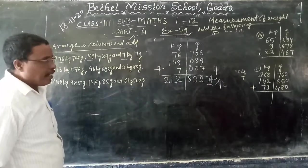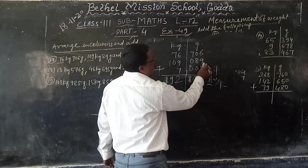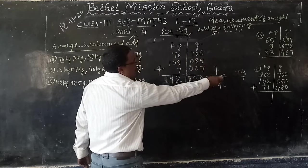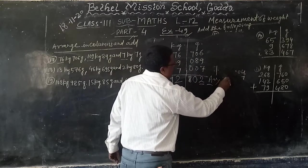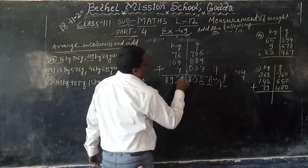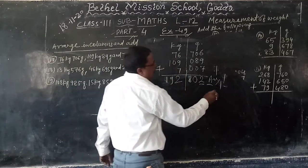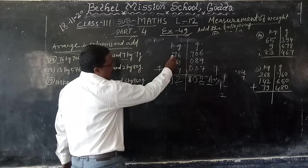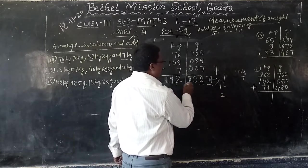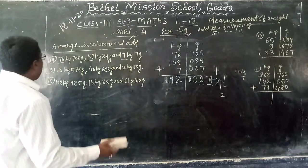Next number. 6 plus 9, 15, plus 7, 22. 2 right, 2 in hand. 8 plus 2, 10. 0 right, 1 in hand. 7 plus 1, 8. 9 plus 6, 15, plus 7, 22. 2 right, 2 in hand. 7 plus 2, 9. 192 kg, 802 gram. Answer.